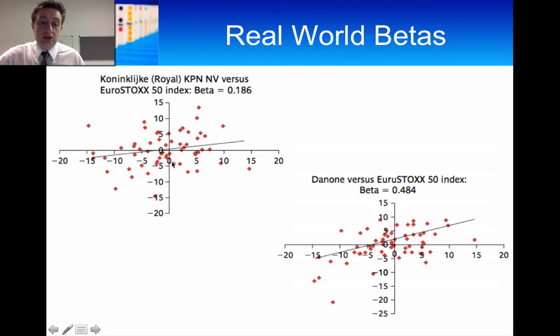We've got KPN here and Danone against returns on the market. Now, the first thing you can see, this is using real data. It's using five years of data. So there are 60 observations here that we've got a beta estimate of 0.186 for KPN. And we have a beta estimate of 0.484 for Danone. But that beta estimate is the slope of the regression line. But you can actually see that there are a lot of outliers. So even although you've got a beta measure that might be significant, there is an awful lot of noise in the relationship. Even at the monthly level, the monthly data level, think about what it would be like at the daily data level.